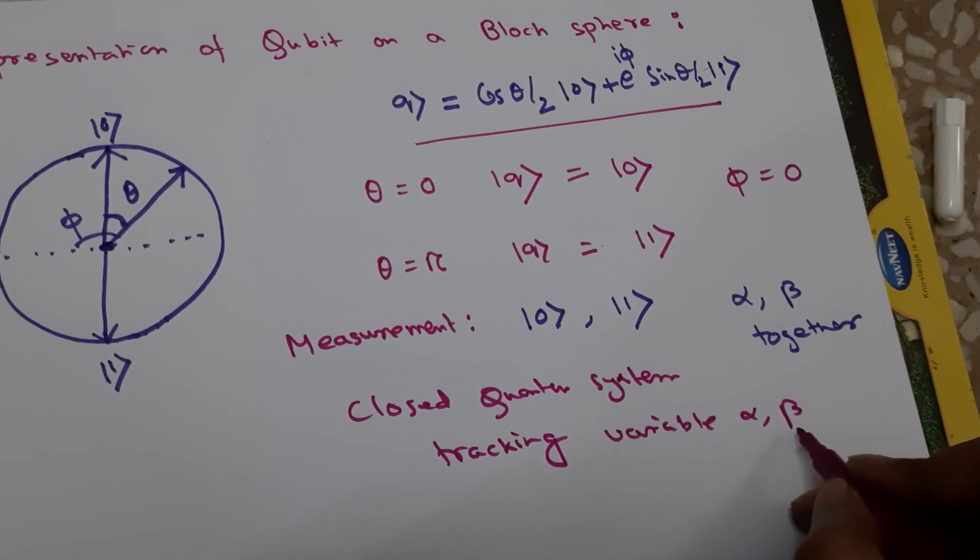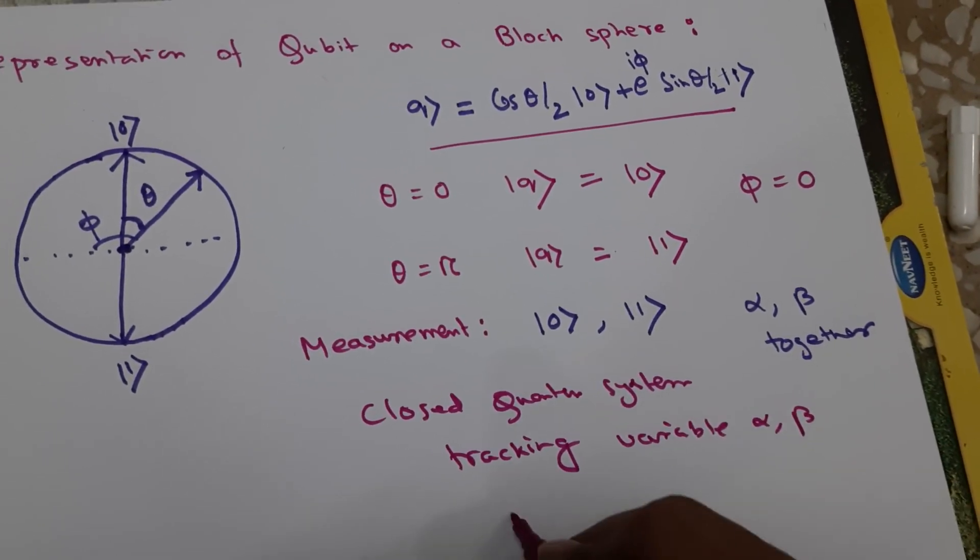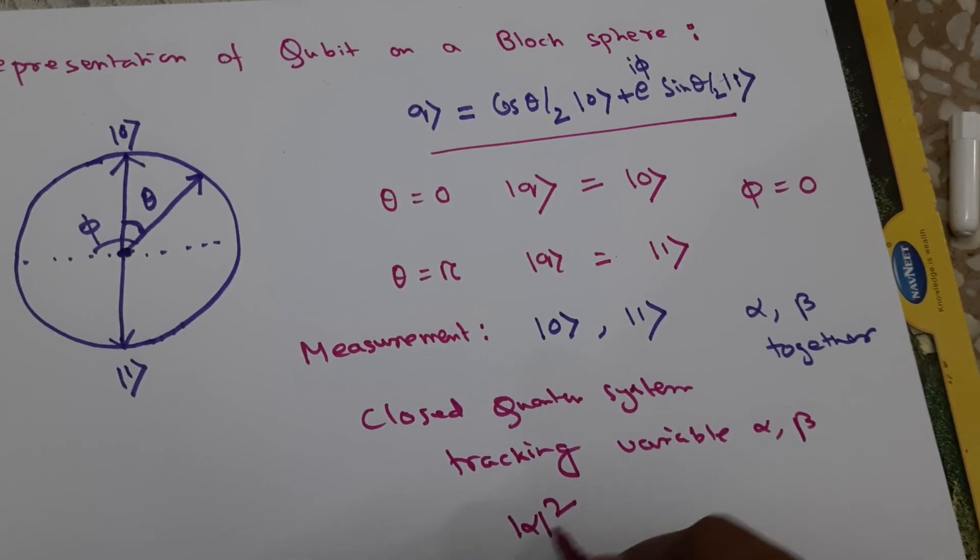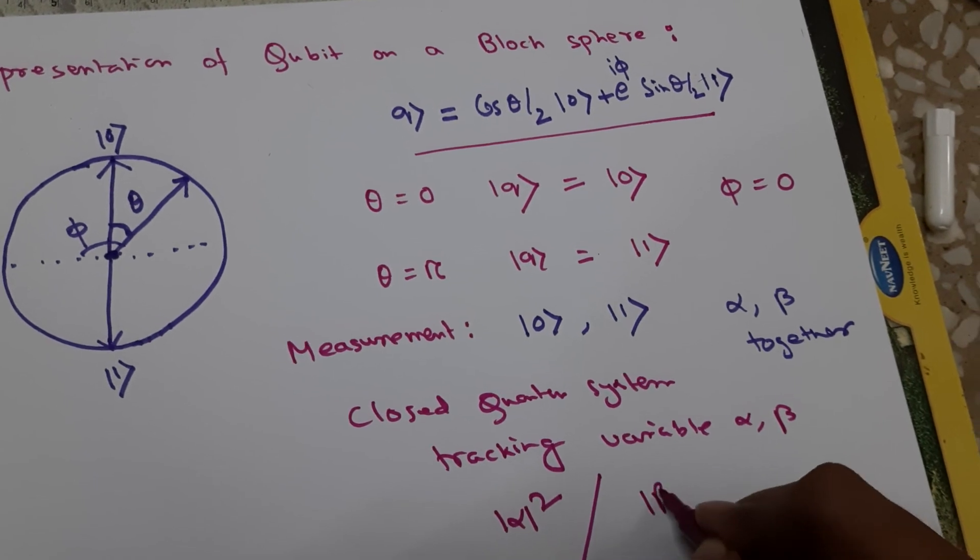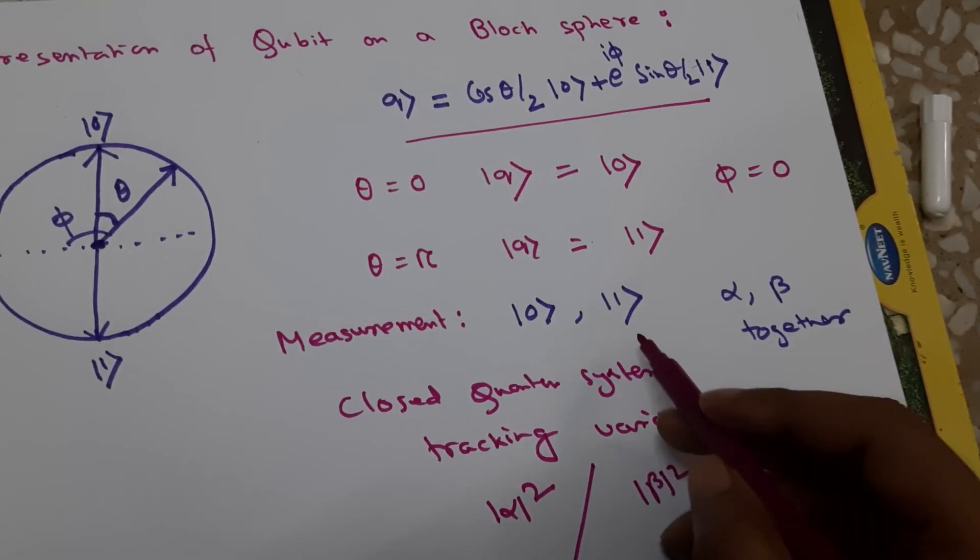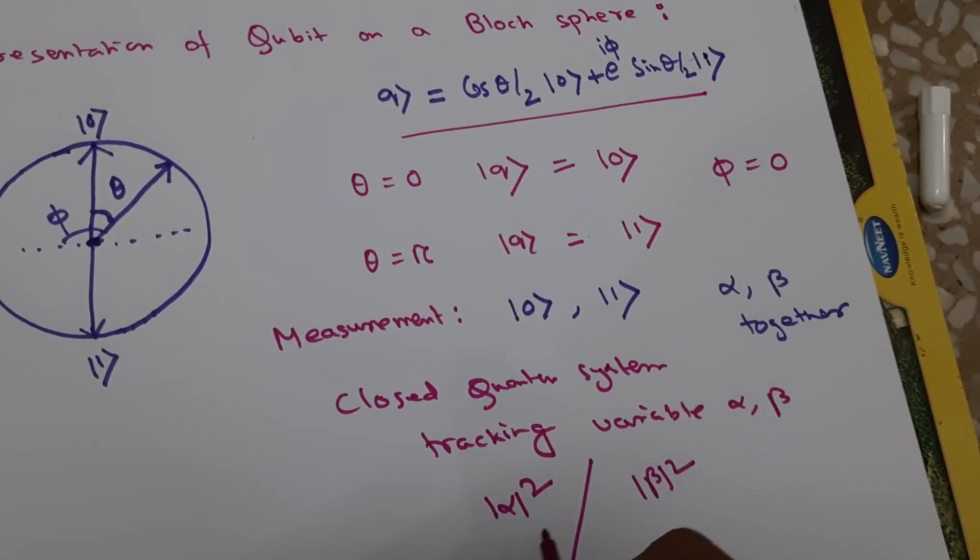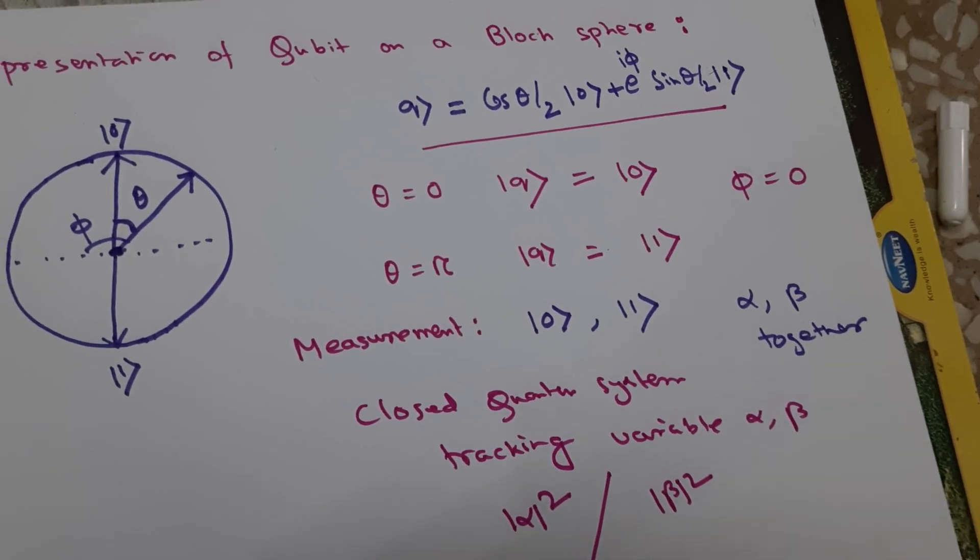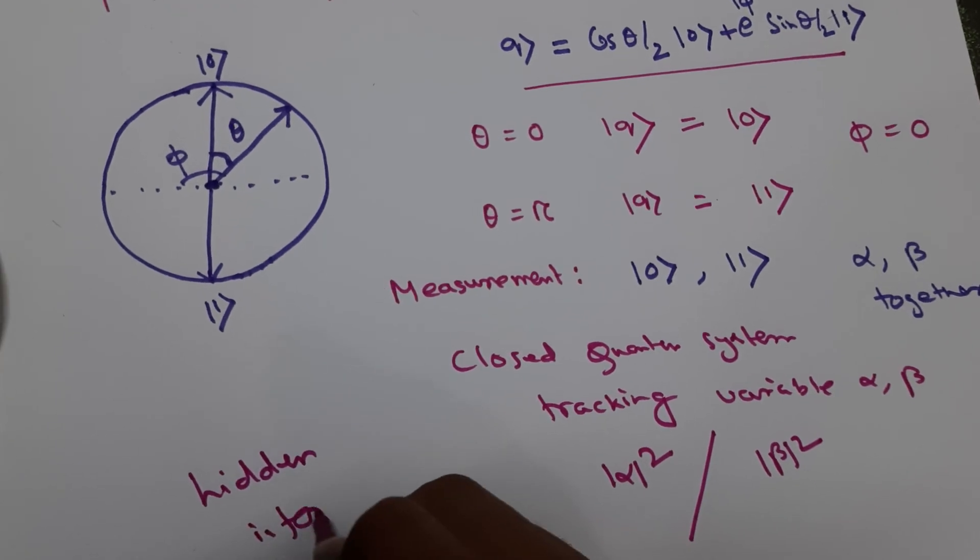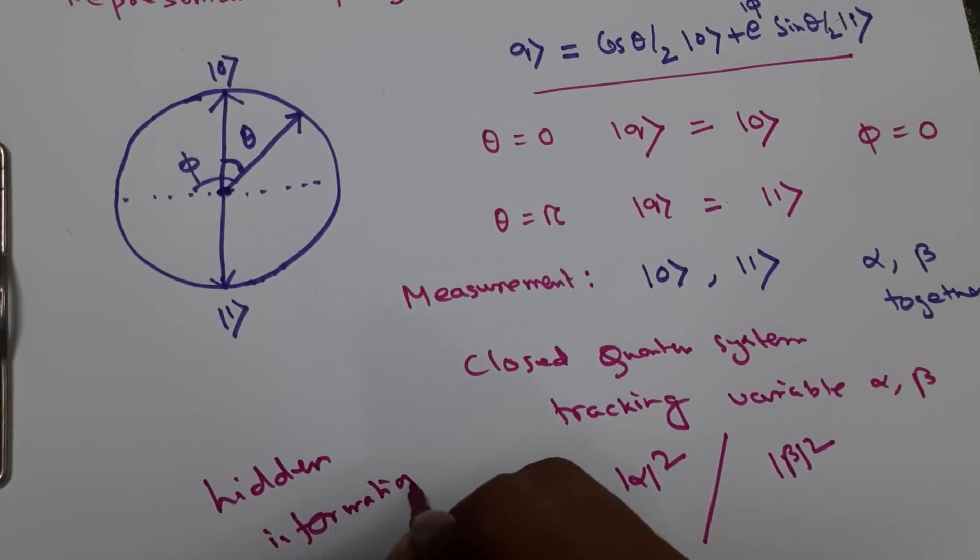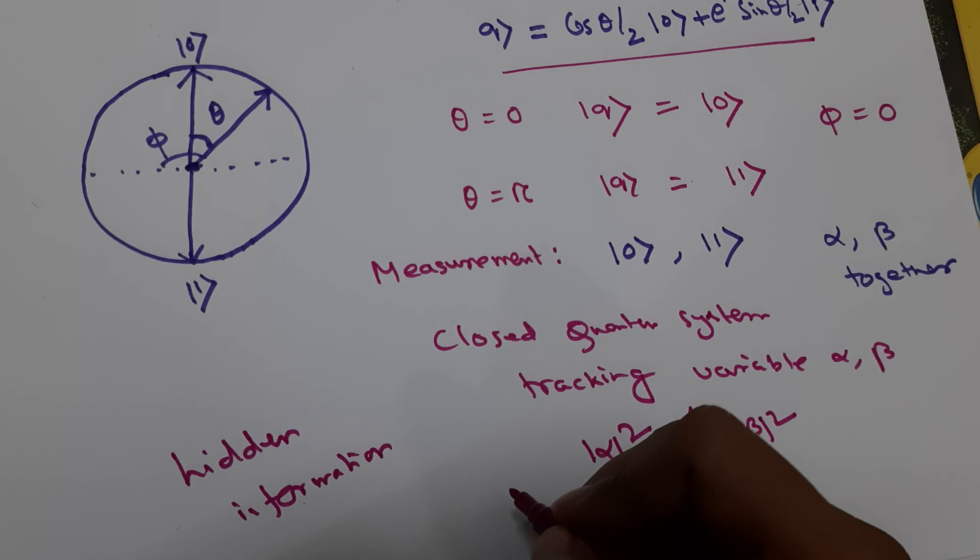But we can never know this information, because when we measure, either we can know alpha squared (the probability if it collapses in the |0⟩ state) or beta squared (if it collapses in the |1⟩ state). We can only know either of these.